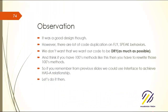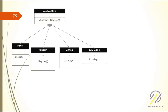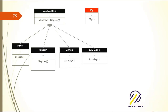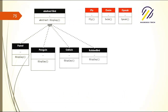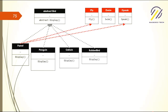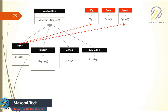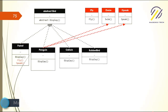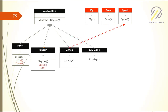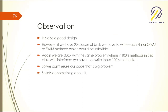From the previous slide, we could use interfaces or the 'has-a' relationship to achieve modular code. We have an abstract Bird class, with Parrot, Penguin, and so on. We define an IFly interface with a fly method, an ISwim interface, and an ISpeak interface. Parrot implements IFly and ISpeak because they fly and speak but do not swim. Penguins swim and speak but do not fly, so they don't implement IFly. Ostrich only speaks.